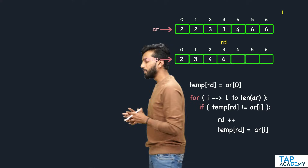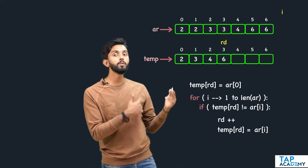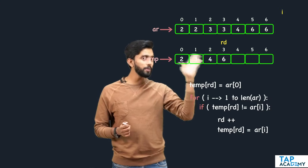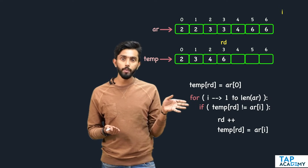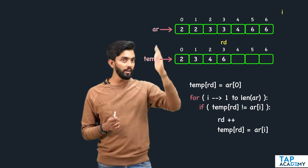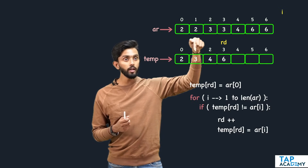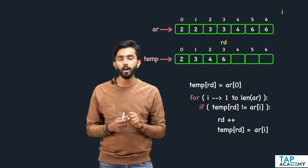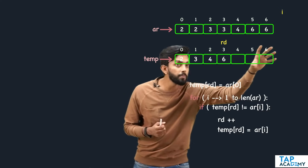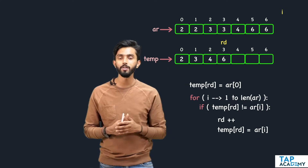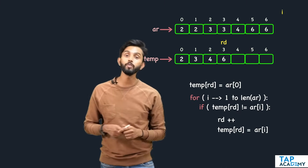As someone learning DSA, your brain should always ask: is this the most optimal solution? The time complexity is O(n) since you must traverse the full array — that can't be reduced. However, creating a new array of the same size means extra space is being allocated, increasing space complexity. The question is: can I avoid using this temporary array completely?